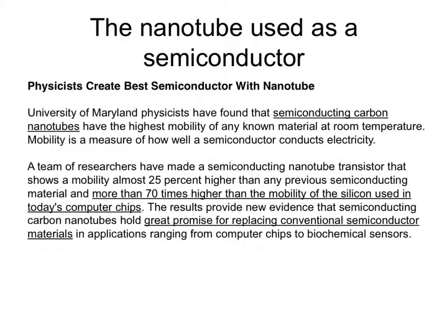The other property of nanotubes which makes them useful is their ability to conduct electricity. Here is part of a news story about physicists creating a semiconductor using nanotubes. Semiconductors in such things as computers have traditionally been made from silicon, but nanotubes are now replacing them as they are many times more efficient than silicon. In summary, nanotubes are used in tennis rackets because they're very strong, and they're also used as semiconductors in electrical circuits.